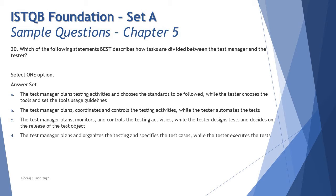Option B: the test manager plans, coordinates, and controls the test activities, while the tester automates the test. Automation is indeed a key responsibility of the tester, and planning, coordinating, and controlling activities is the responsibility of the test manager. But the question asks which is best, so let's check the remaining two options.